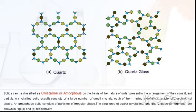Amorphous and crystalline solids. Solids can be classified as crystalline or amorphous on the basis of the nature of order present in the arrangement of their constituent particles. A crystalline solid usually consists of a large number of small crystals, each of them having a definite characteristic geometrical shape. An amorphous solid consists of particles of irregular shape.